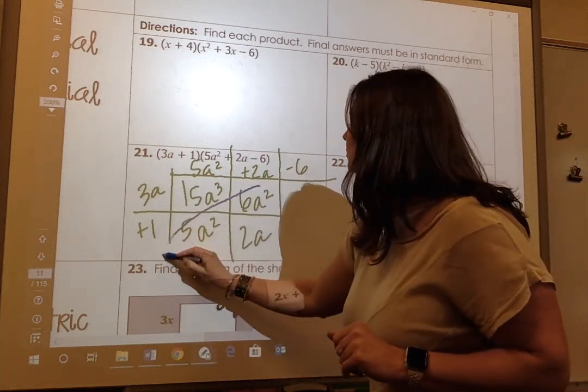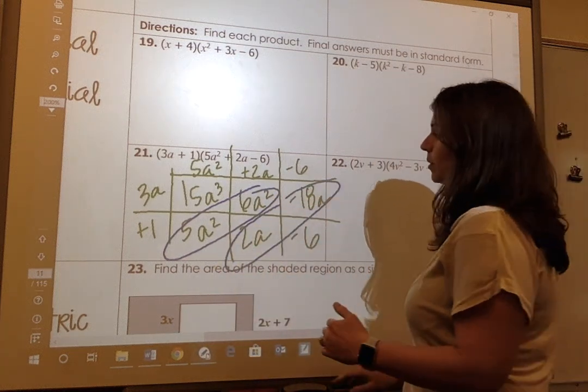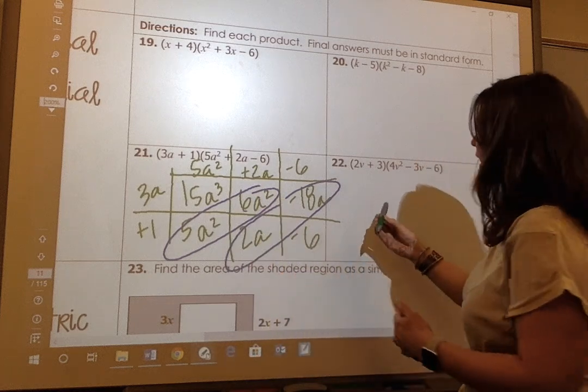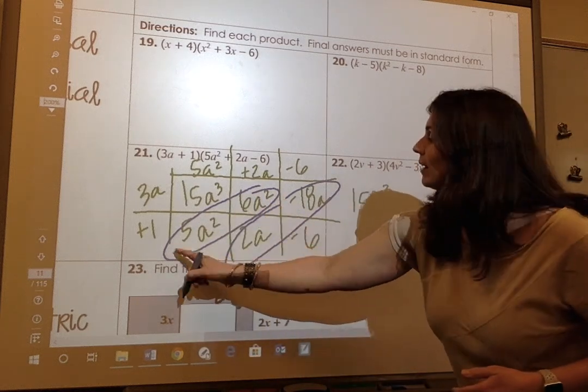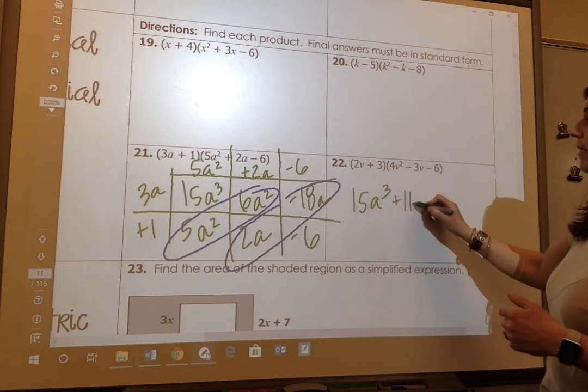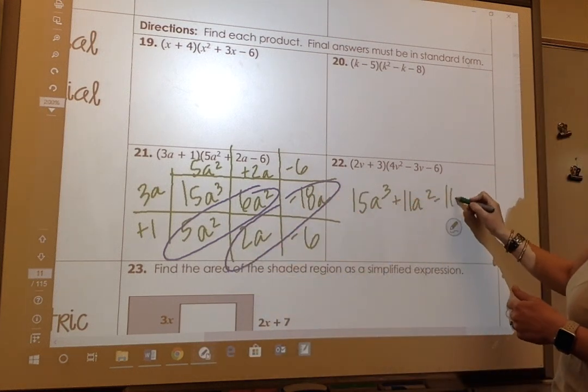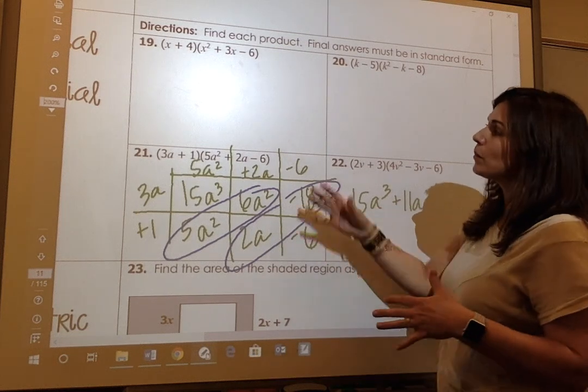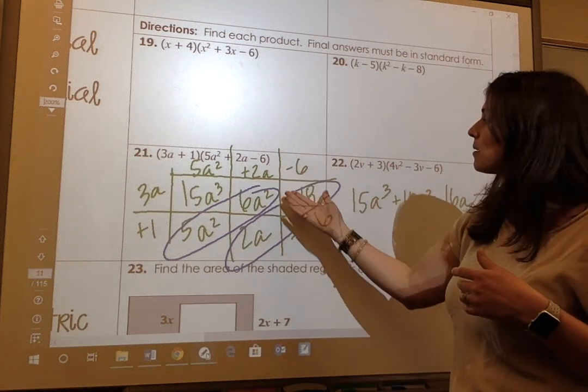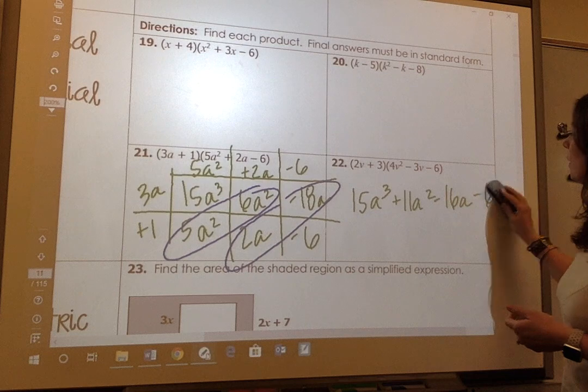Now that my inside area is filled out, I'm going to circle my like terms. a squareds go together and a's go together. So I'm going to start greatest degree first. So I have 15a to the third. When I combine these like terms, I get plus 11a squared. When I combine these like terms, I get negative 16a. And then my constant term negative 6 is left over. So that's why I like the box just because it makes it easier the more polynomials you have.